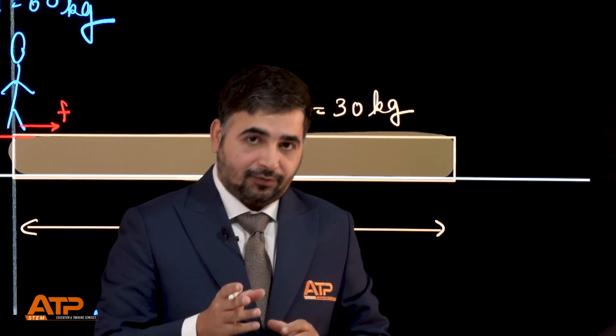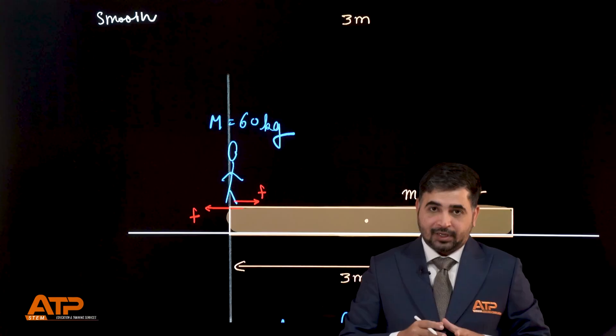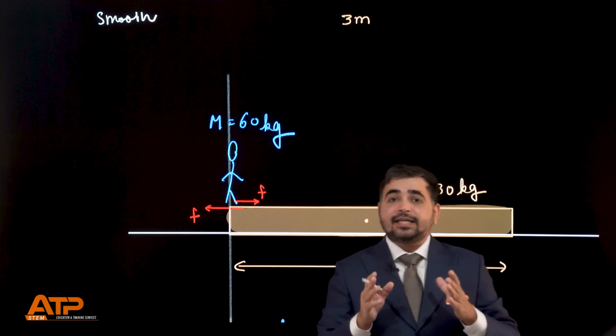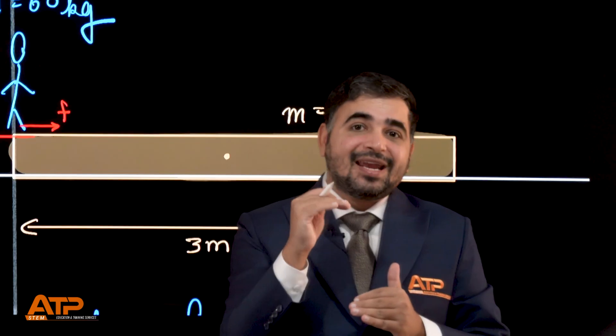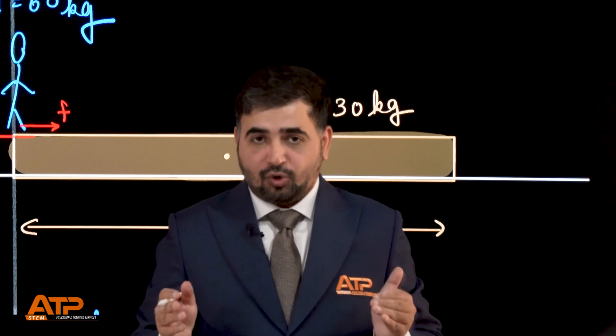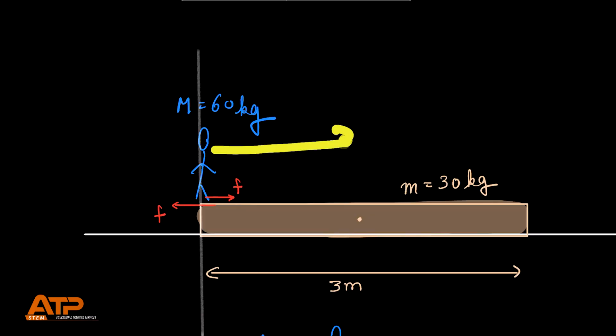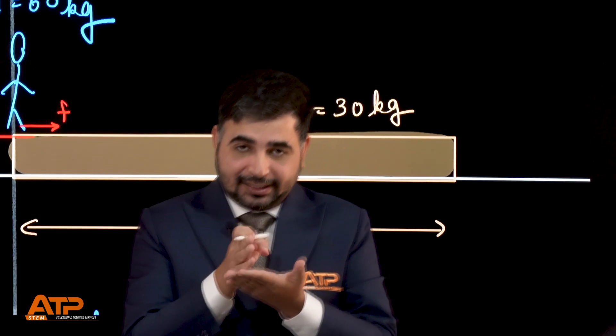So net horizontal force in this scenario is completely zero. If net horizontal force on the entire system is zero then center of mass of the system should remain at rest. Center of mass cannot move. If center of mass can't move, as the person will try to go this way, the plank will automatically move the other way in order for center of mass to remain at the same location.